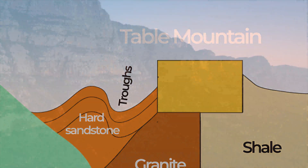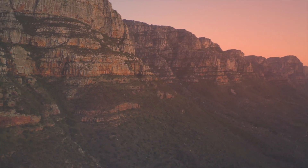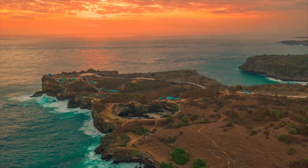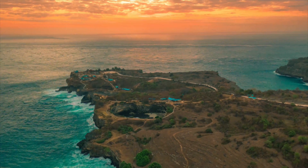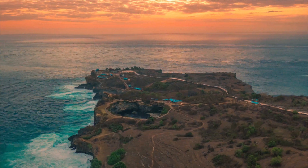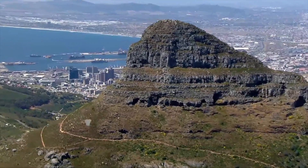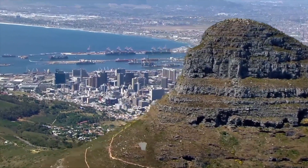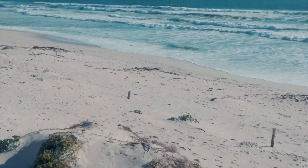Back when it was formed, Table Mountain rose three to four times higher than what it is today. Then erosion got to work on it. Millions of years of rain and wind chipping away its tilted outer layers one grain at a time, reducing it to its inner core, where the layers had remained horizontal. These layers eroded along the vertical planes formed during deposition, and the result was a flat-topped mountain.